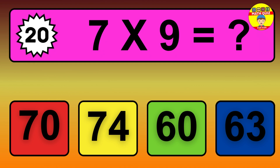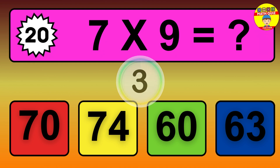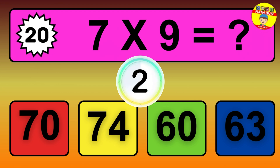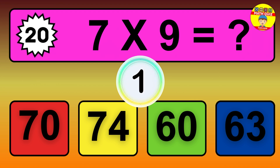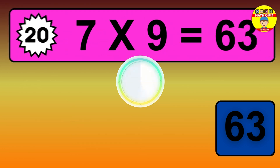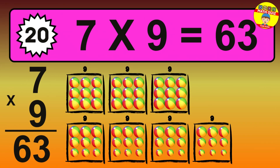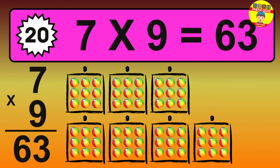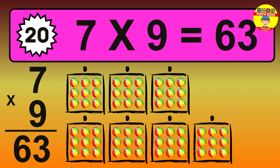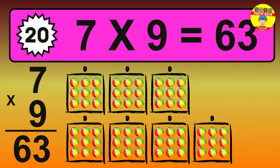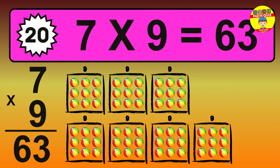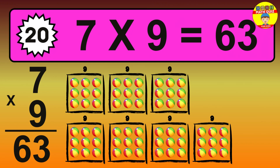Question 20. 7 times 9 equals what? The answer is 7 times 9 is 63. To calculate, we have 7 groups with 9 balls each. So how many balls do we have? 63 balls.